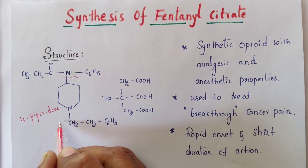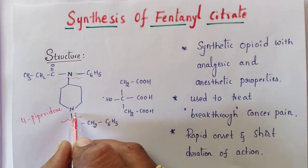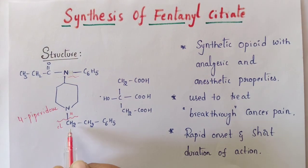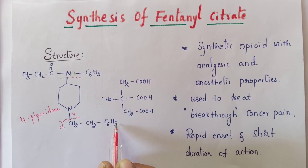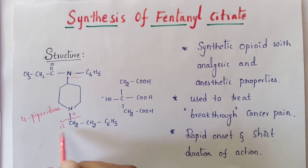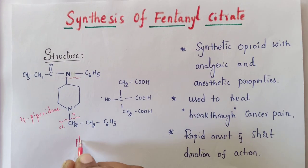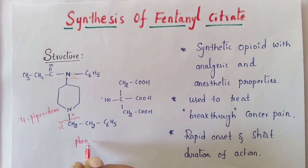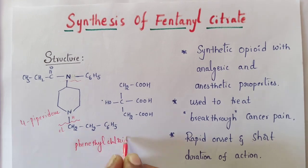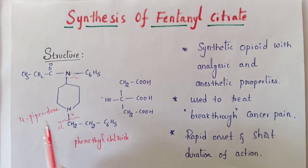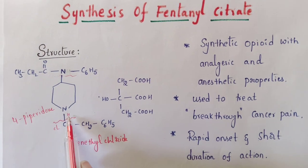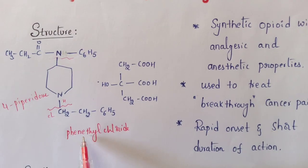We remove up to this position — it possesses an H — and we attach Cl here. The name of this molecule is phenethyl chloride, which is the second starting material. So the first starting material, 4-piperidone (substituted with H), is treated with phenethyl chloride.